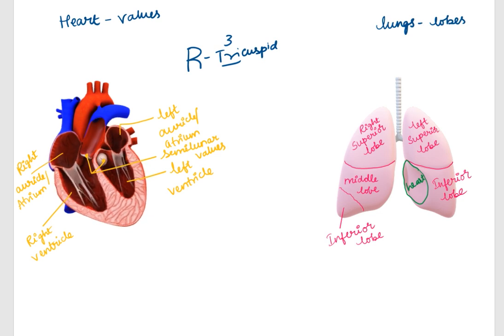While you are writing the letter L, you are giving two strokes: 1, 2. There, the valve which is present is the bicuspid valve. Bi means 2.